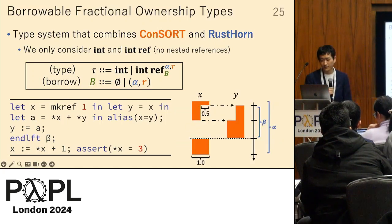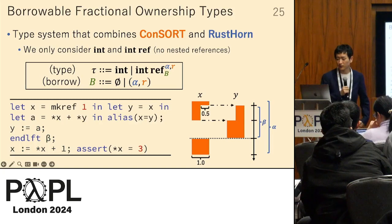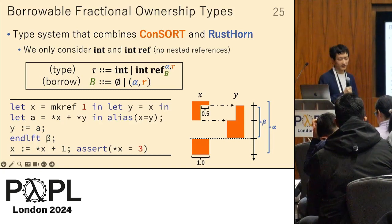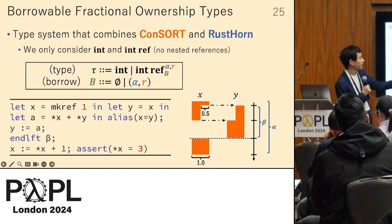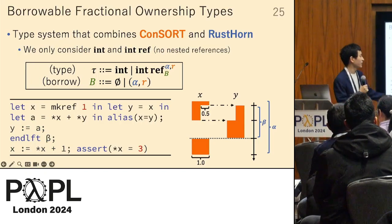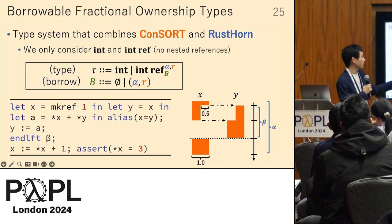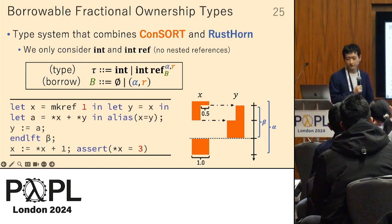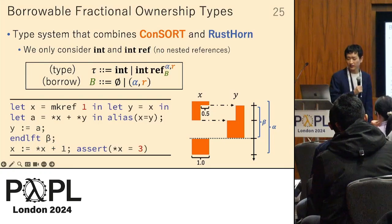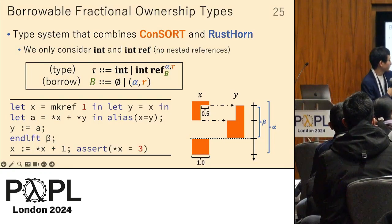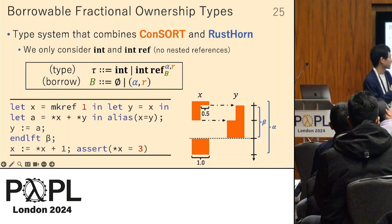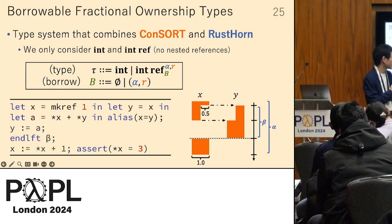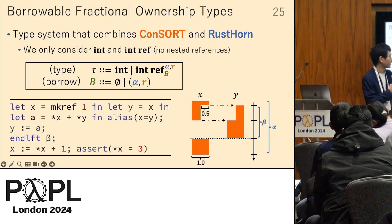After the first line, x lends 0.5 ownership to y, and after the second line it increases to 1.0 full ownership. After the lifetime of y ends — lifetime beta ends — x retrieves all of its ownership.